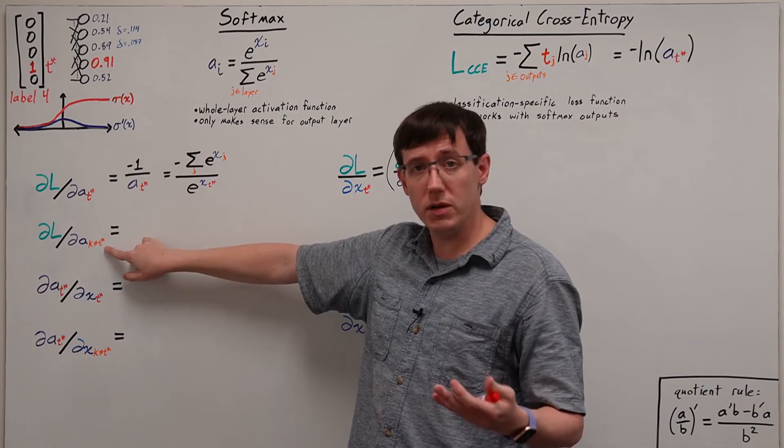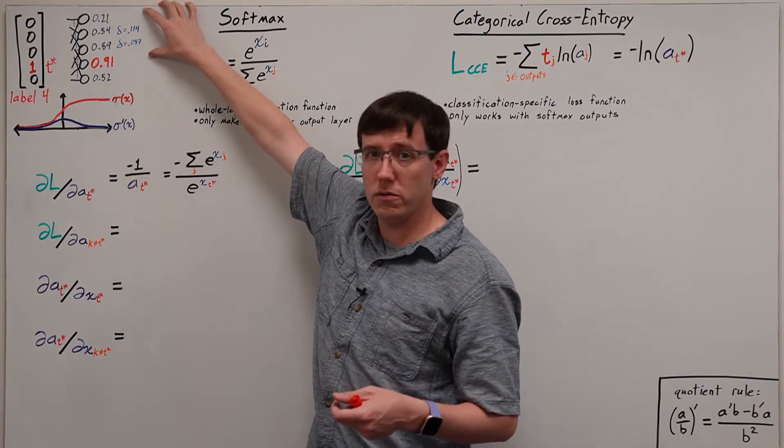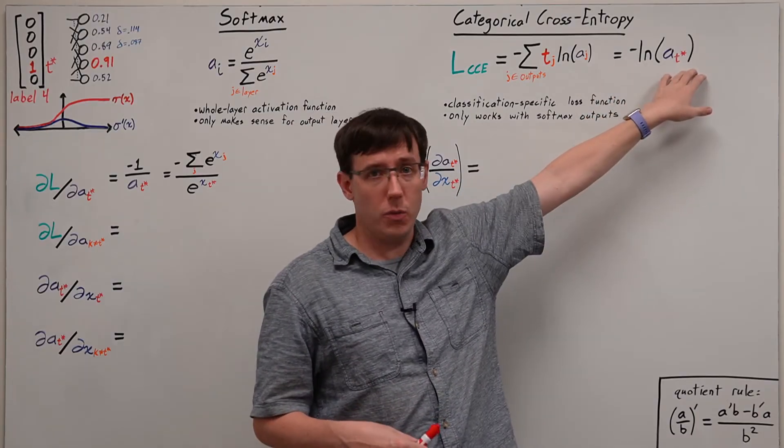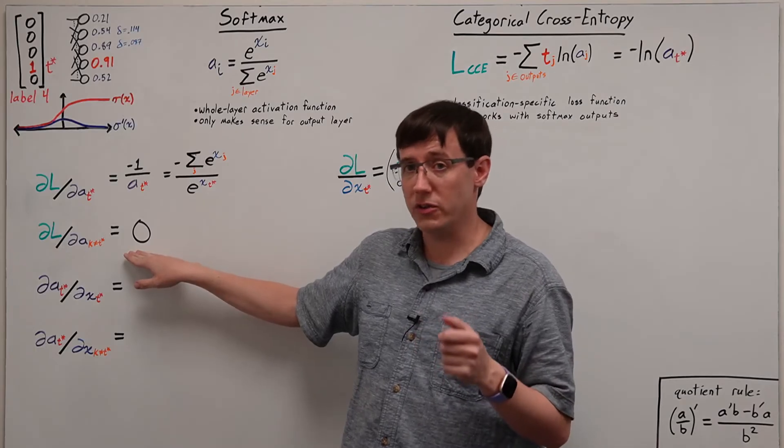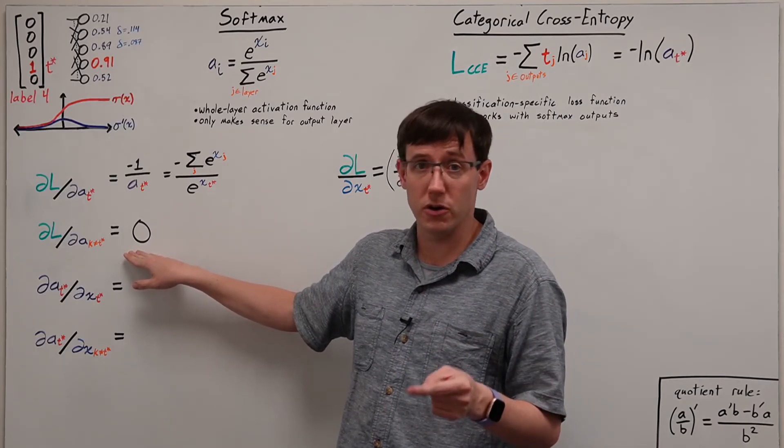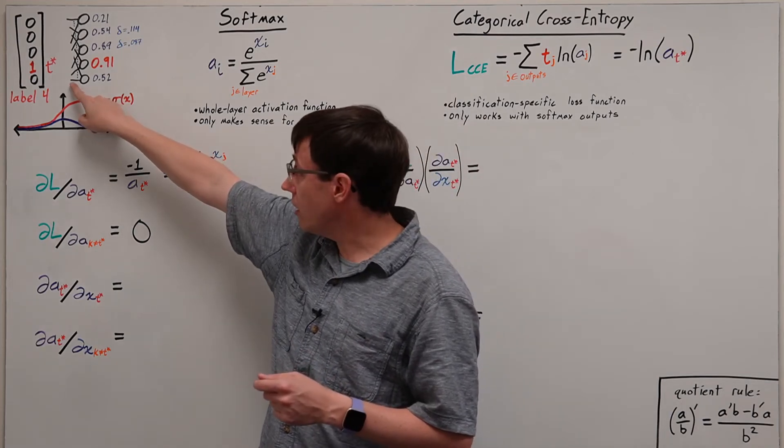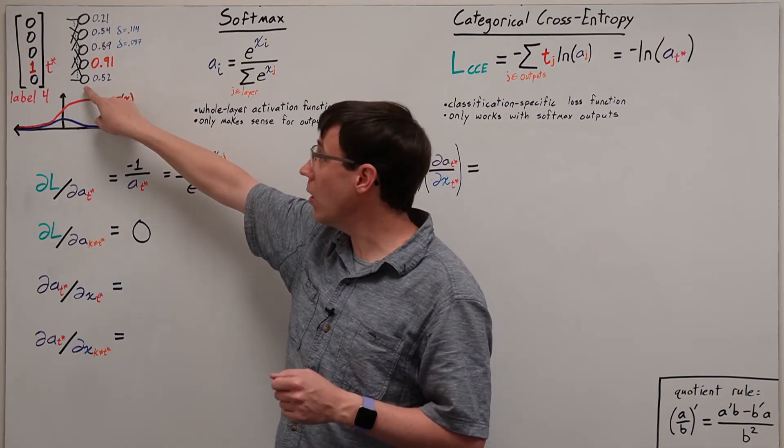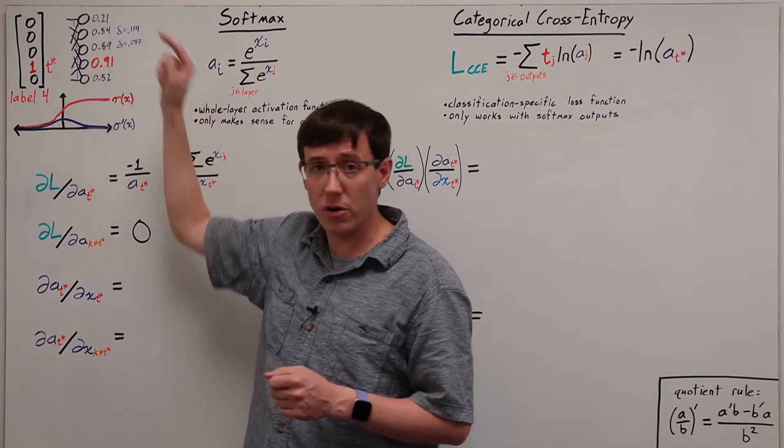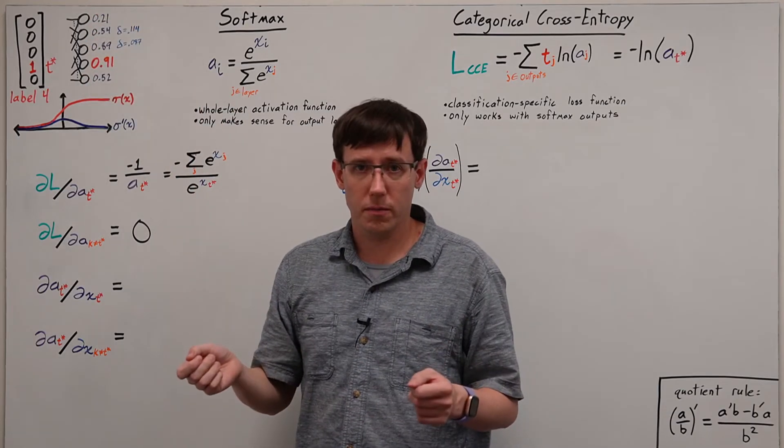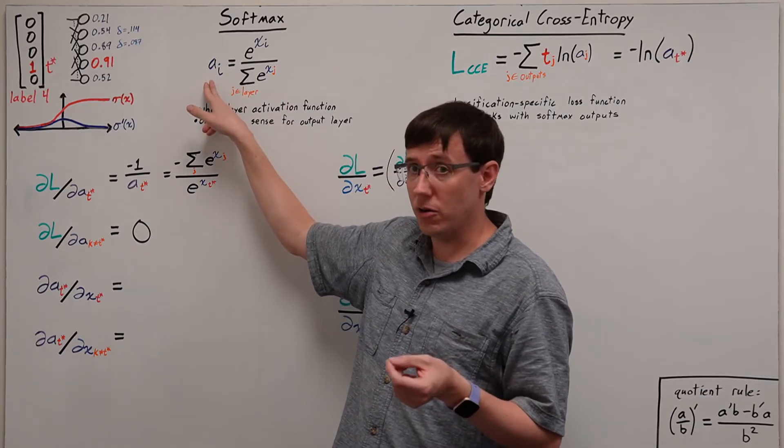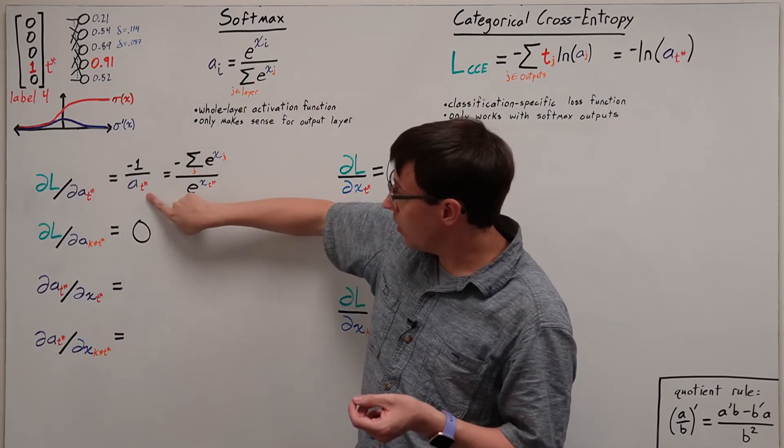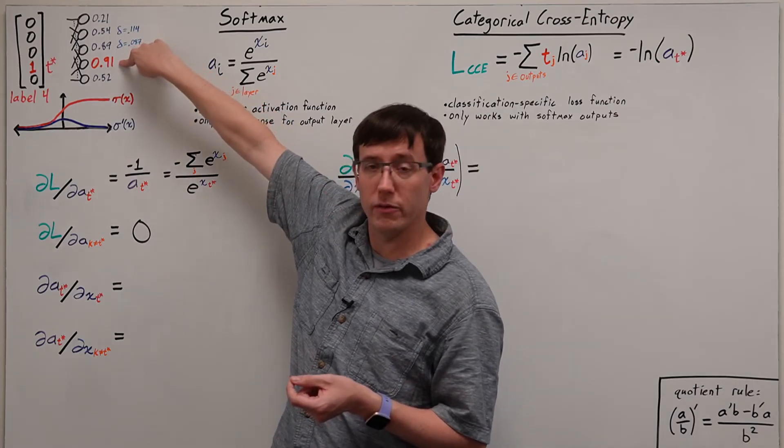On the other hand, the derivative of the loss with respect to any of the other nodes is just zero because those activations don't appear in the loss formula. And this is why categorical cross entropy only works with an activation function like softmax. Because if the delta for a node depended only on its own activation, then we would be performing no updates at all to any of the nodes where we wanted to output zero. But in the case of softmax, the activation for any neuron depends on the inputs to all of the neurons.